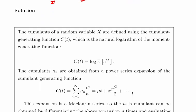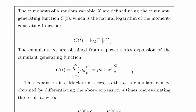The cumulants of a random variable X are defined using the cumulant generating function, which is the natural logarithm of the moment generating function. The cumulants are kappa n - kappa 1, kappa 2, and so on.